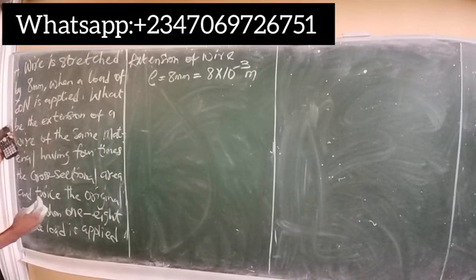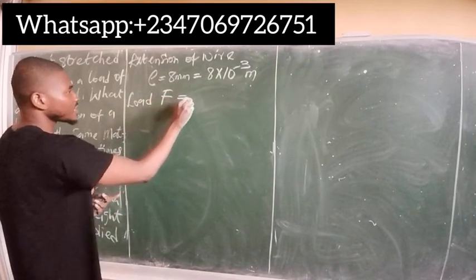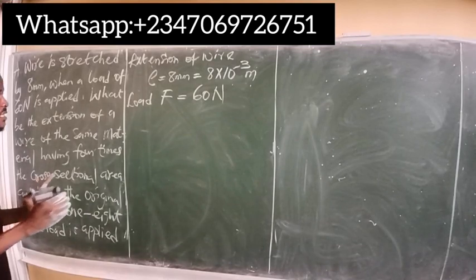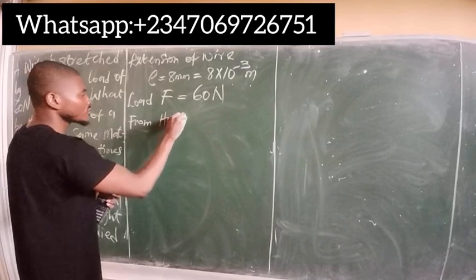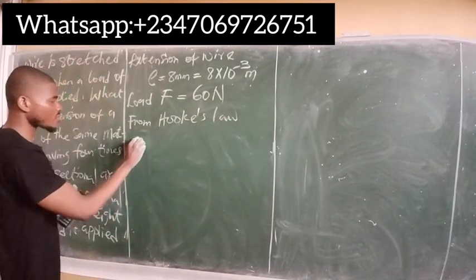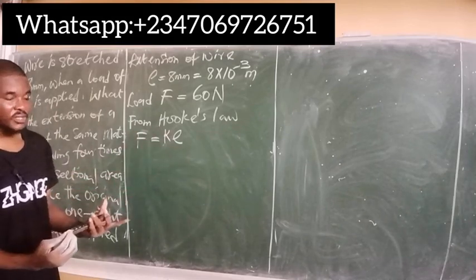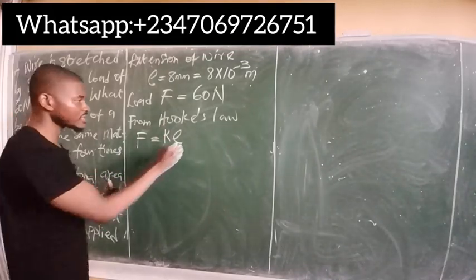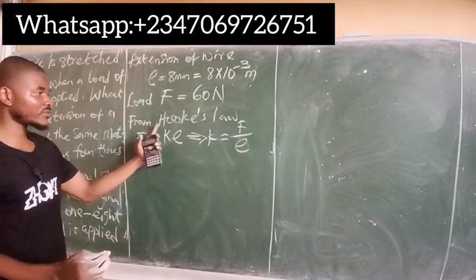The load applied in the first condition — force f — is given as 60 newtons. Now let's analyze the first condition before moving to the second. From Hooke's Law, force equals spring constant k times extension. We know the force and the extension but not the spring constant, so let's find k. The spring constant k equals force divided by extension.